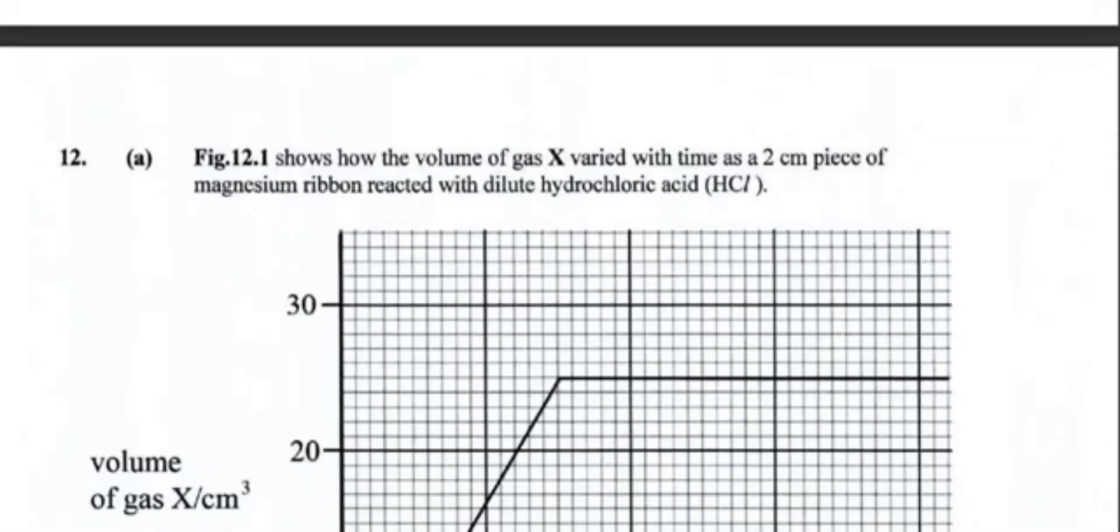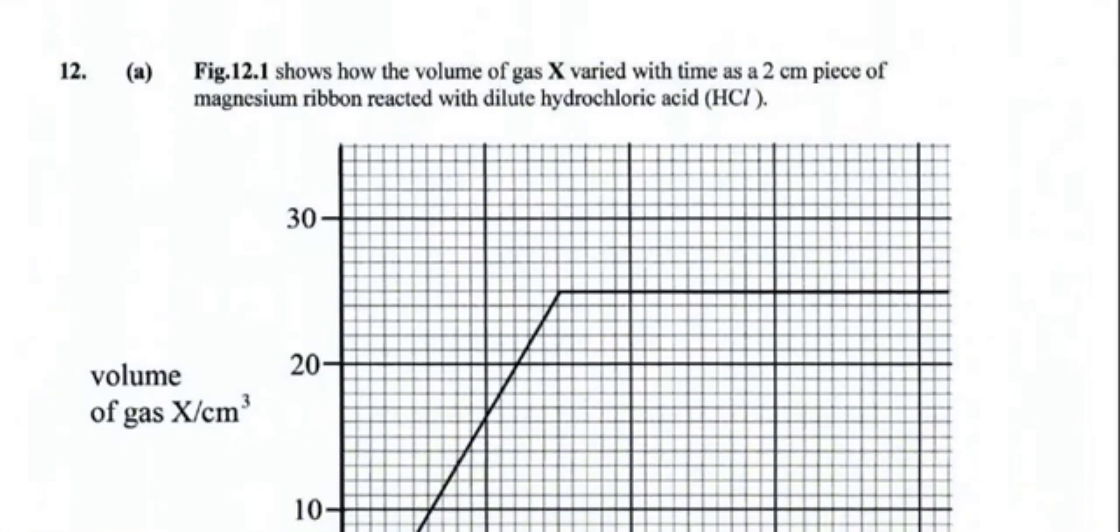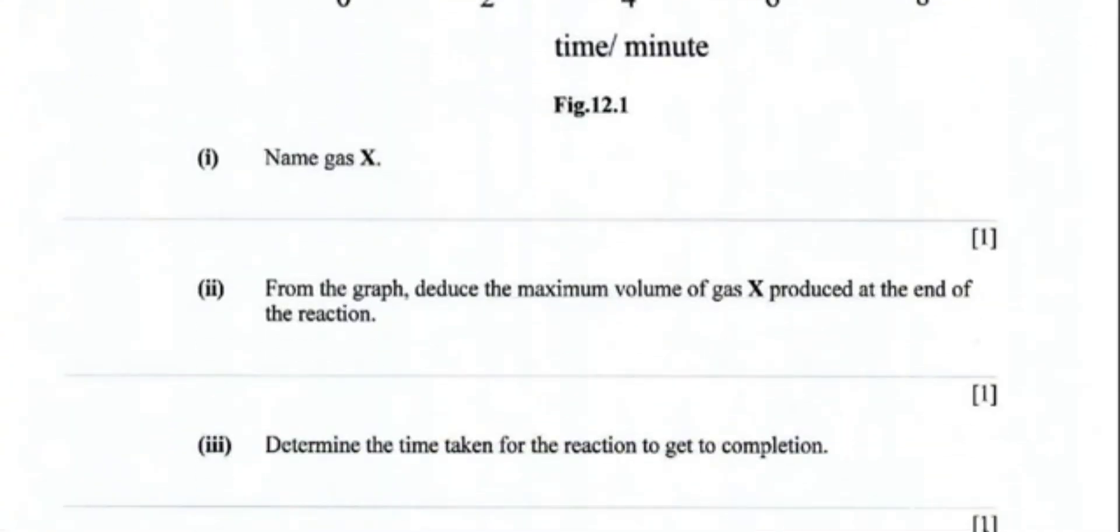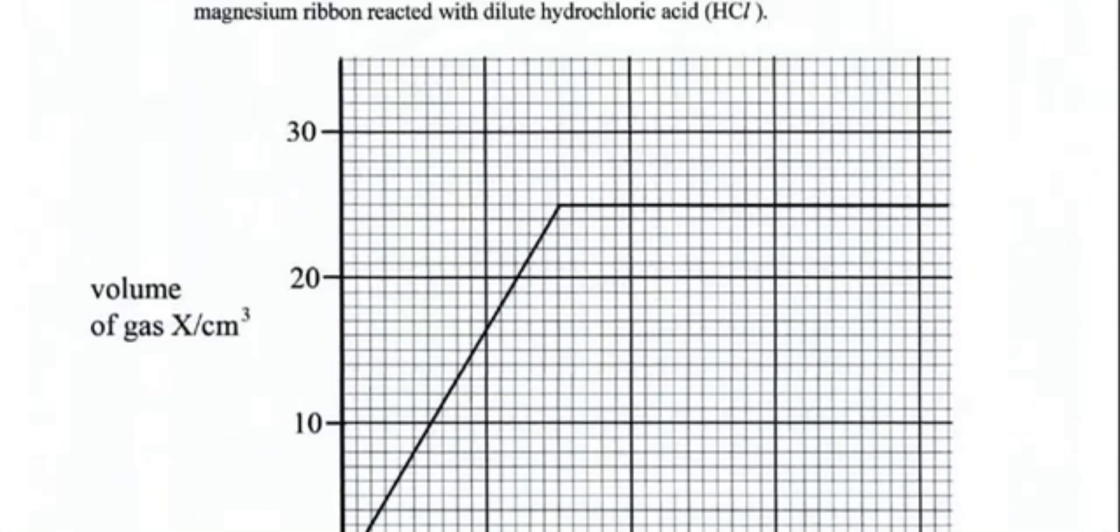Figure 12.1 shows how the volume of gas X varied with time as a two centimeter piece of magnesium ribbon reacted with diluted hydrochloric acid, HCl. So this is the reaction between a metal and an acid. You should know that the products are salt and hydrogen. So what is gas X? Gas X obviously is hydrogen. Moving on, from the graph determine the maximum volume of gas X produced at the end of the reaction. The maximum volume is the one at which the graph levels off. You can see from our graph, it is 25 cubic centimeters.